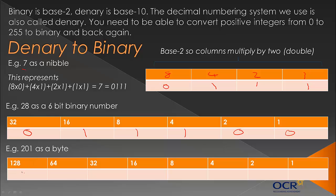128 does go into 201 — you have to be careful with that. 201 minus 128 equals 73. Does 64 go into 73? Yes. 73 minus 64 is 9. Does 32 go into 9? No. Does 16 go into 9? No. Does 8 go into 9? Yes, remainder 1. Does 4 go into 1? No. Does 2 go into 1? No. Does 1 go into 1? Yes. The answer is 11001001.